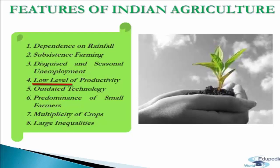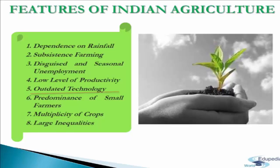The next feature is low level of productivity. In India's agriculture sector, per hectare productivity and per worker productivity are both very much below the levels compared to developed countries. The next feature is outdated technology. Since the majority of farmers in India have small holdings and are poor, backward technology is the only alternative left to them, which also results in low productivity.